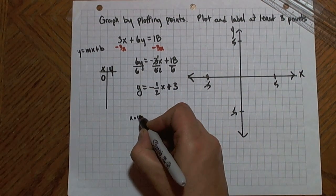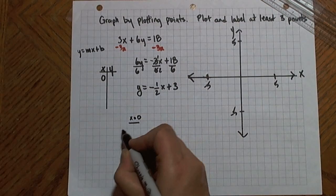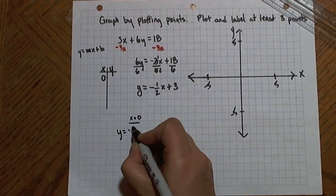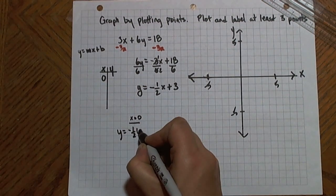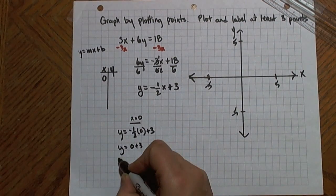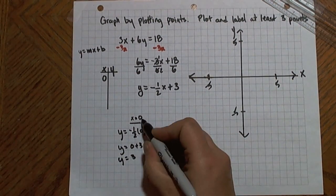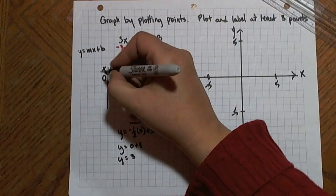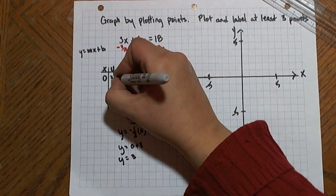So when x equals 0, I'll have y equal negative 1 half times 0 plus 3, which is y equals 0 plus 3, or y equals 3. So when x equals 0, y equals 3. And that gives me one point that I'll be able to graph.